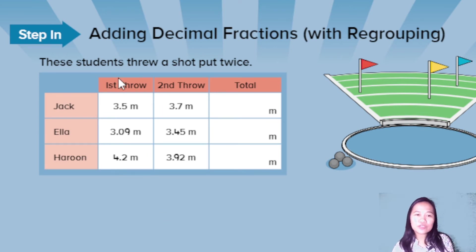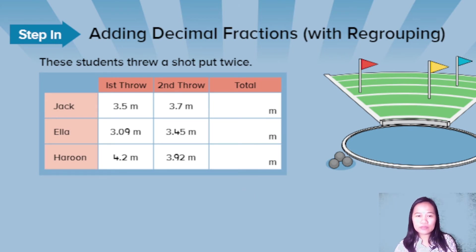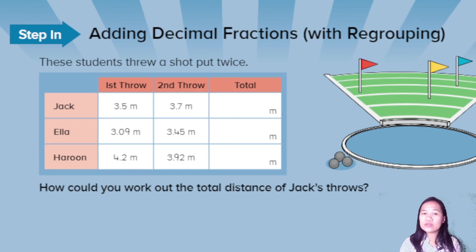Each person threw in the first round and the second round. We then find the total for each. How could you work out the total distance of Jack's throw?